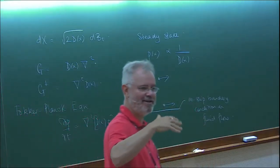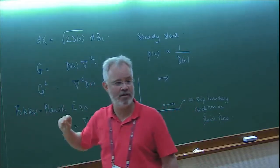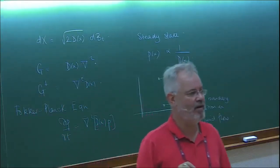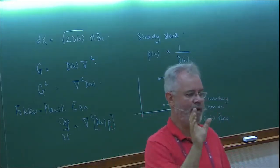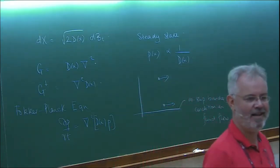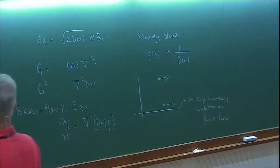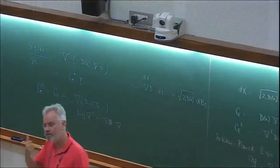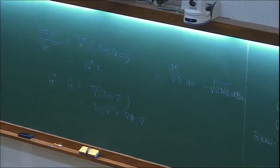Otherwise, if you use this system to describe diffusion of ink in a glass of water, because the diffusion constant goes effectively to zero at the glass walls, instead of seeing a uniform distribution you would see all the particles stuck to the edge. When you write down the stochastic differential equation, you normally think of the drift term as being imposed by some external force or potential, but here there is no external force — it's just the gradient of the diffusion constant.